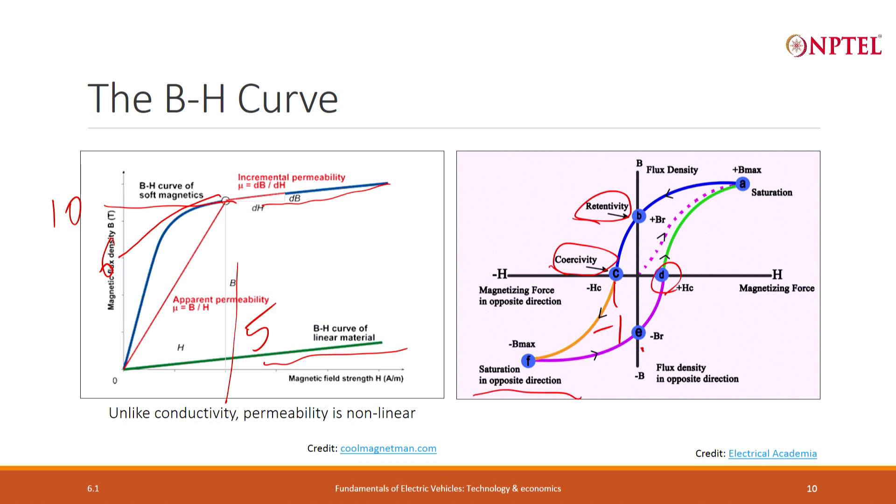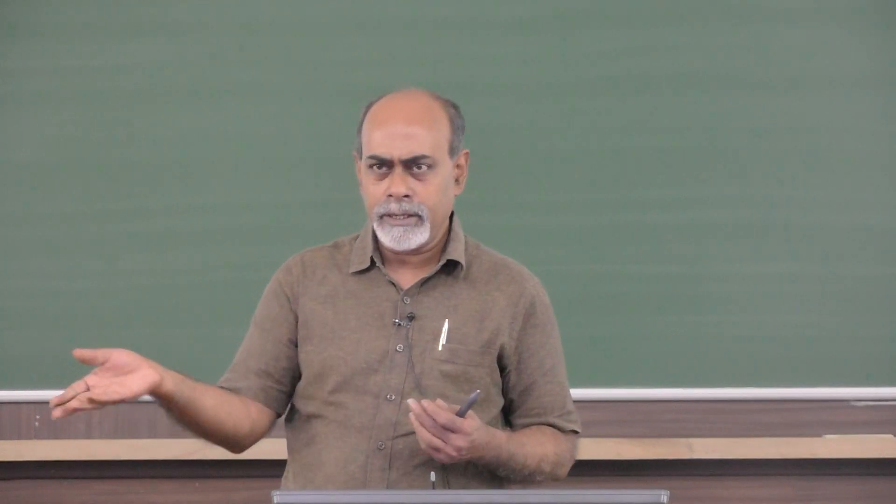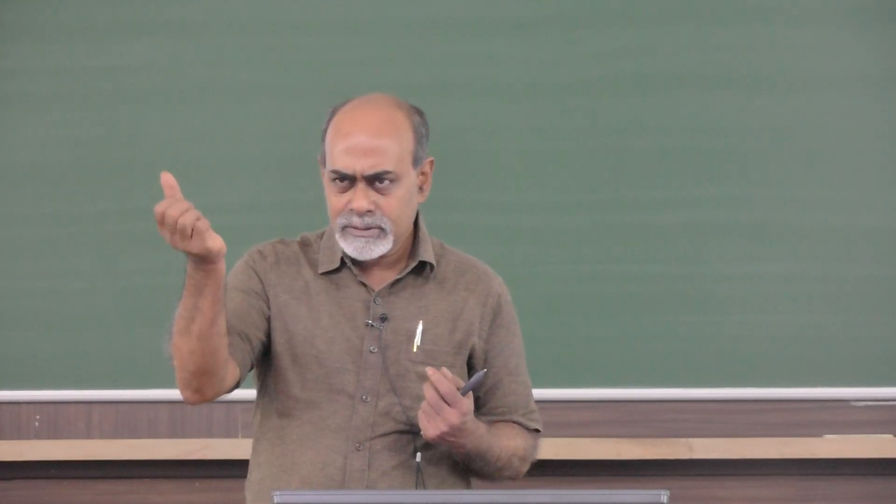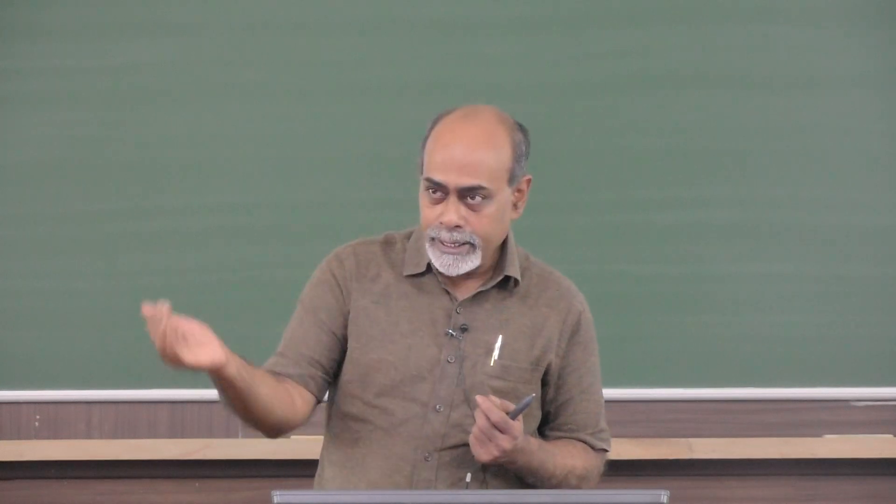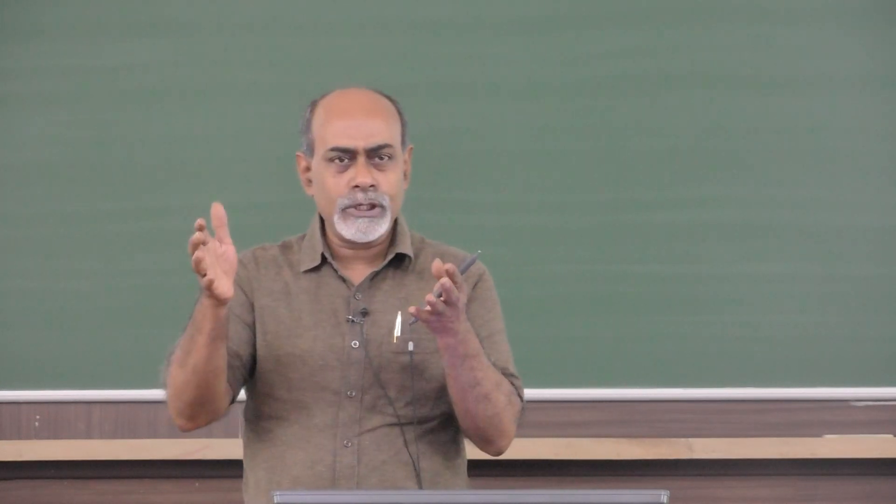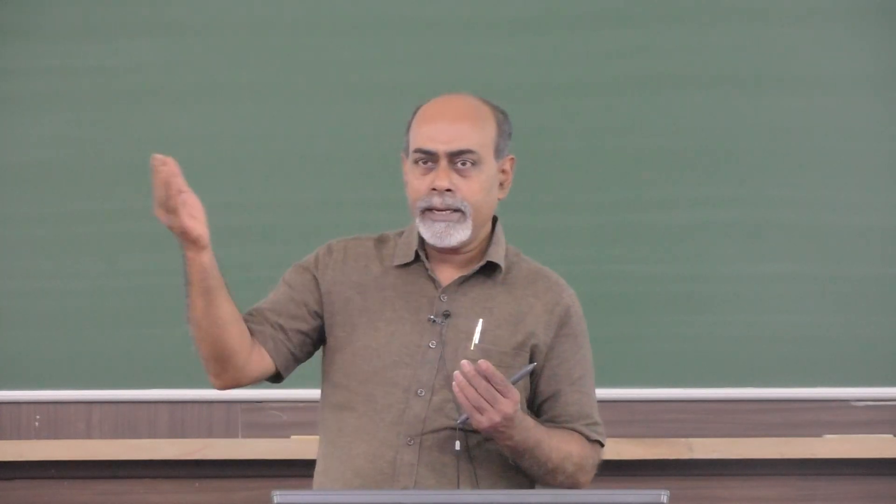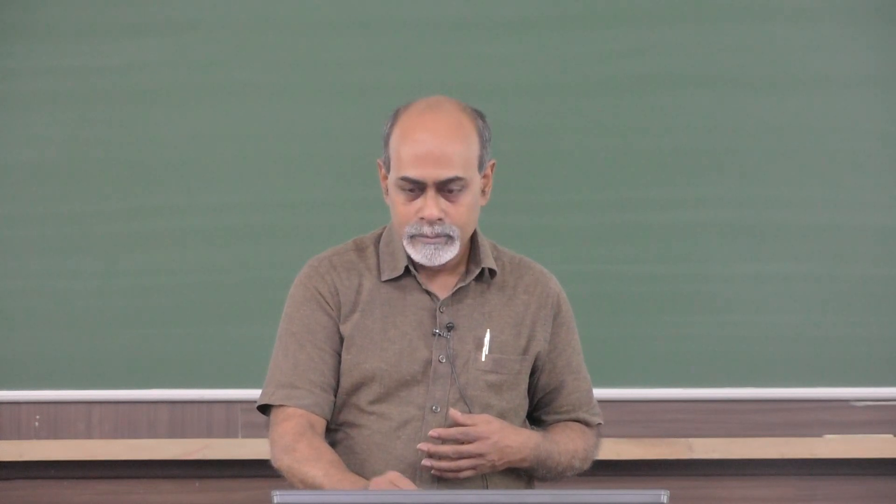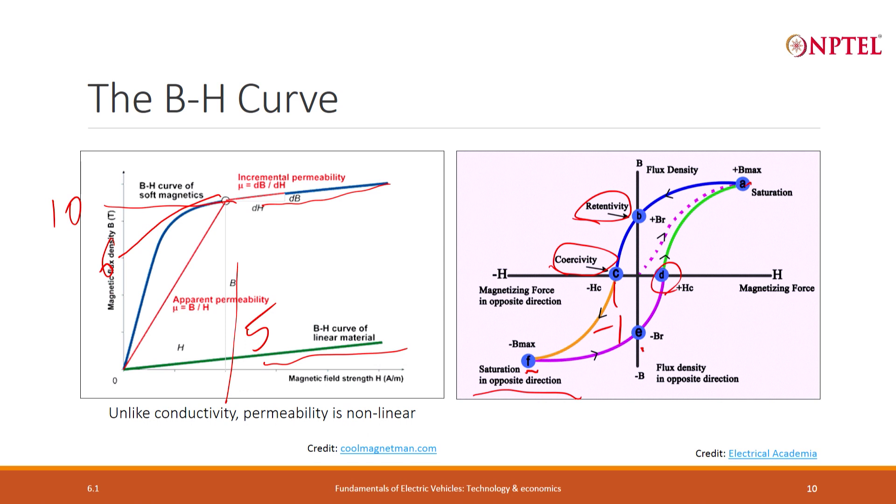Normally the product of the field parameter and the flow parameter is actually the power, like we plotted voltage versus current and the product of voltage and current is the power. Likewise, the product of B and H is somewhat like a measure of the power. The area under the B-H curve is a measure of the total energy because the integral of power is the energy. The energy that it takes to move it from here to here is more than the energy that it releases back when I come back from here to here.